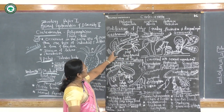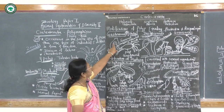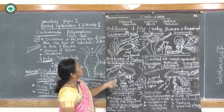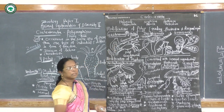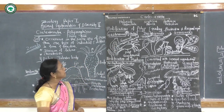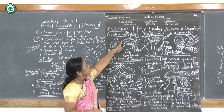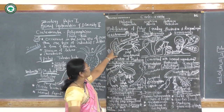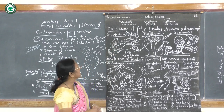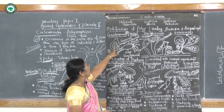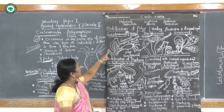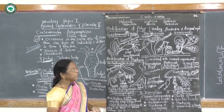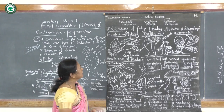Another zoid is the gonozoid, where developing medusa buds are attached, and they perform the function of reproduction. Hence they are also called gonozoids or gonophores. This gonozoid branch produces new individuals, and gonophores are present on these branches.